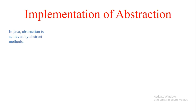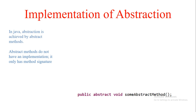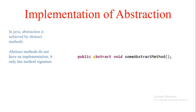Abstract methods do not have implementation — they only have a method signature. The abstract keyword is important here; it makes a method abstract. It has a complete signature but ends with a semicolon instead of a body, similar to how instance variables are declared. It has only a declaration, not a body.